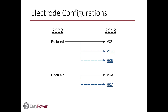Electrode configurations: the previous version of the arc flash model was based on enclosed and open air equipment types, with testing of electrodes in a vertical orientation. New testing showed that orientation is an important factor for incident energy estimation and should be considered. Therefore, the enclosed and open air types were further defined by their electrode orientation. Enclosed from the 2002 standard is now defined into three different orientations: VCB, VCBB, and HCB. Open air is now defined into two different orientations: VOA and HOA.